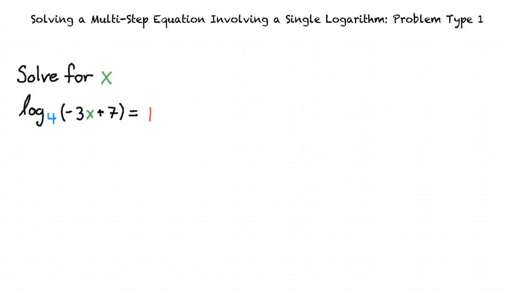Here, we have a problem asking us to solve for x in the base 4 logarithm of negative 3x plus 7 equal to 1. How would we begin to solve this problem? The first step to solving this problem is expressing this logarithmic equation in exponential form.